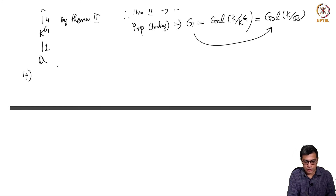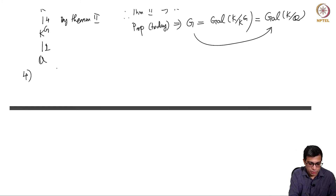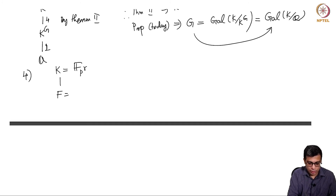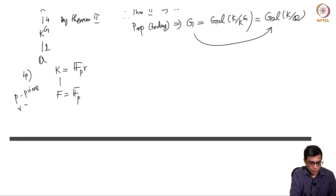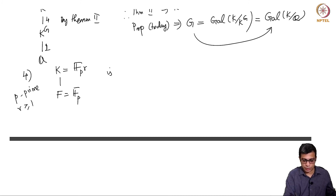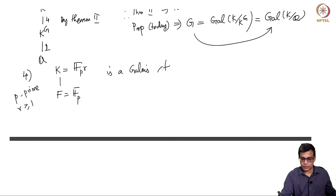The fourth example: the finite field extension F_{p^r} over F_p — where p is prime and r is a positive integer — is a Galois extension. I will stop here on this example and discuss it in more detail in the next video.